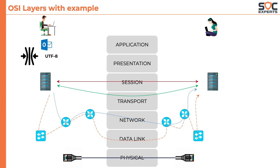All the data is transmitted as bits through cables or wireless signals at the physical layer. On the recipient side, the data moves from the cable to the user's machine, where the presentation layer takes care of decoding, decrypting, and decompressing the data. Finally, the Outlook application displays the message to the recipient.